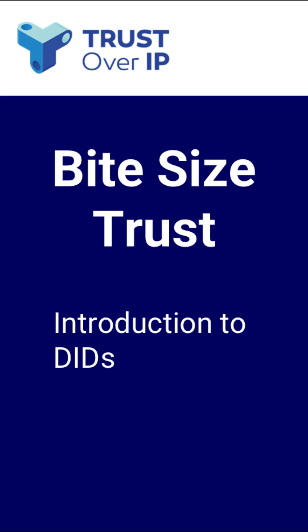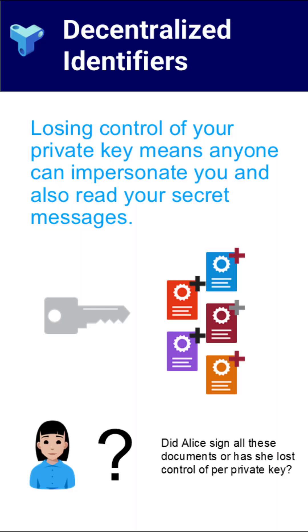When we use private and public keys for security, there's always one big question: what happens if the private key is compromised? If someone else gets access to it, they can impersonate you, sign documents in your name, and access things they shouldn't. The whole system relies on keeping that private key secure. But no security is perfect. Keys can be lost, they can be stolen, and once they're compromised, how do you recover?